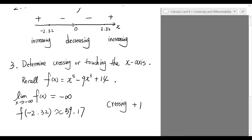The second critical point is zero. In this interval, the function is decreasing. The value of the function at zero is 14, which is still positive. Hence, there is no crossing of the x-axis between negative 2.32 and zero, since both values are positive and the function doesn't descend enough to cross the x-axis.